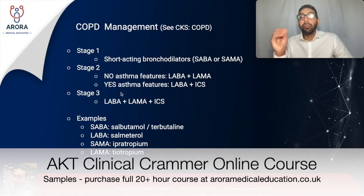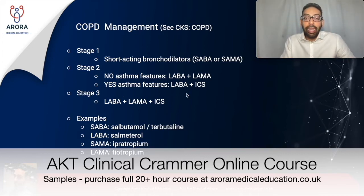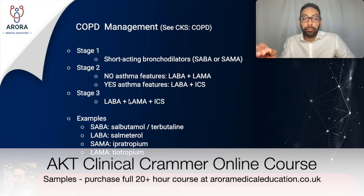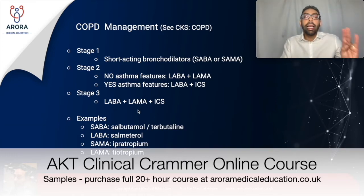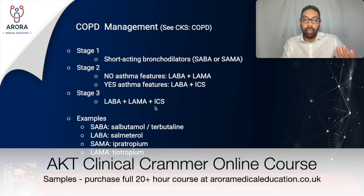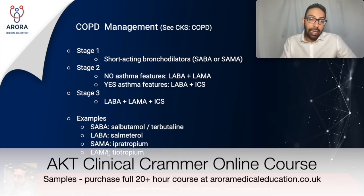If asthma features are present in a COPD patient at step two, the treatment is a LABA plus inhaled corticosteroids (ICS). Previously, ICS use was determined by FEV1 greater or less than 50% predicted, but now it is determined by the presence or absence of asthma features. Step three combines all three: LABA plus LAMA plus ICS. Common examples: SABAs — salbutamol, terbutaline; LABA — salmeterol; SAMA — ipratropium; LAMA — tiotropium.